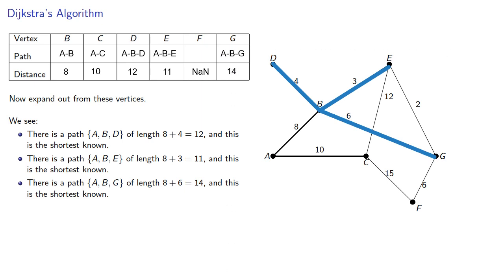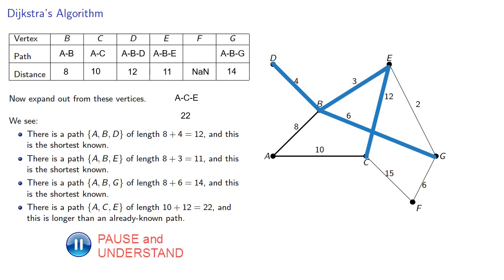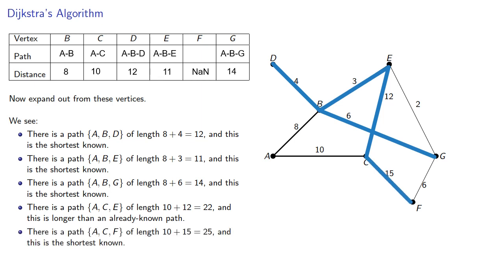We can also expand outward from C. There's a path A to C to E, which has length 22, and this is the shortest. Wait. We already found a path that's shorter. So this path is actually longer than an already known path, and we won't change anything. And finally, there's a path A to C to F with length 25, and this is the shortest known.